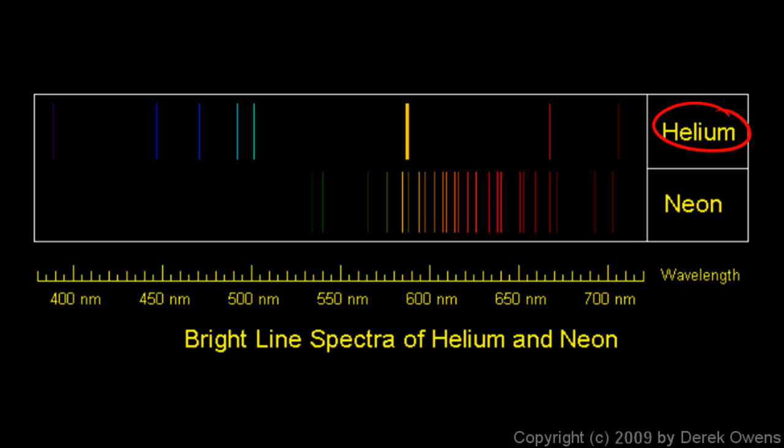On the top of the picture is the light emitted by helium. If you heat helium gas up enough, you get light at certain frequencies, and only those frequencies. If you heat neon up, it emits light at certain frequencies. You see them there.